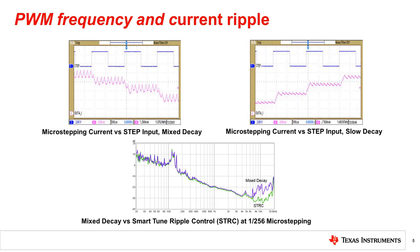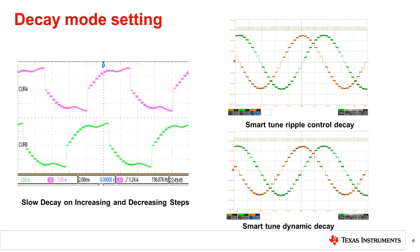The smart tune ripple control algorithm uses slow decay for current regulation, but keeps a fixed ripple current instead of a fixed PWM off time as with other decay modes. The test result is shown in the bottom chart of this slide. The smooth and quiet operation of a stepper motor happens when perfect sinusoidal current waveforms are applied to the windings. Any current deviation from the desired shape causes uneven torque in the motor, which manifests as vibrations and noise during operation. In the left picture, due to back EMF, especially at high speed and on decreasing steps, a fixed PWM off time slow decay cannot apply enough voltage to the winding terminal to bring the output current back to the ideal value.